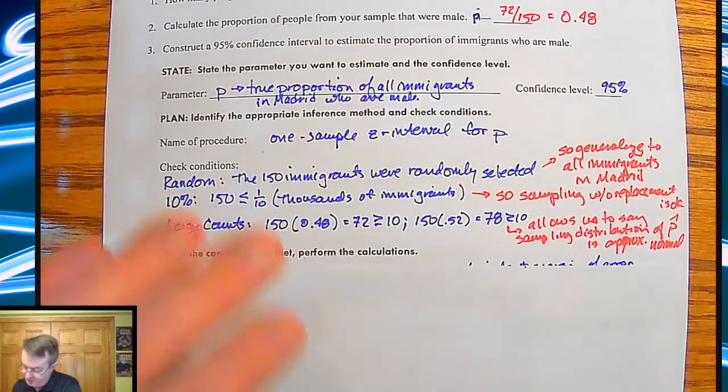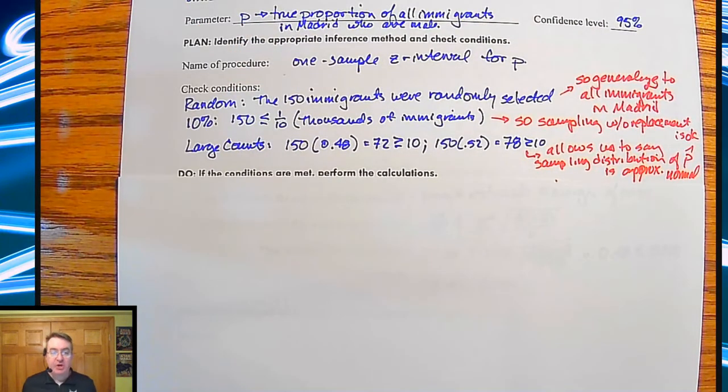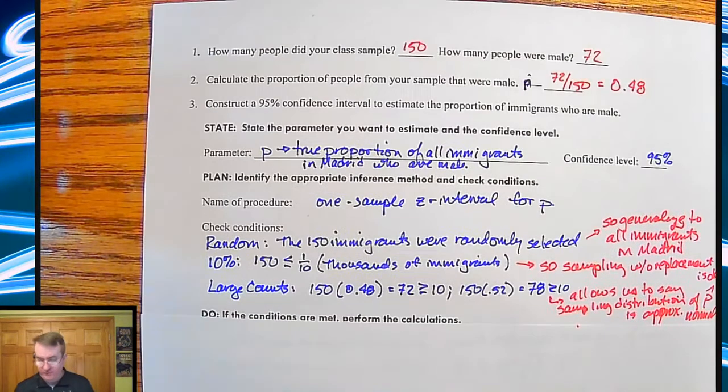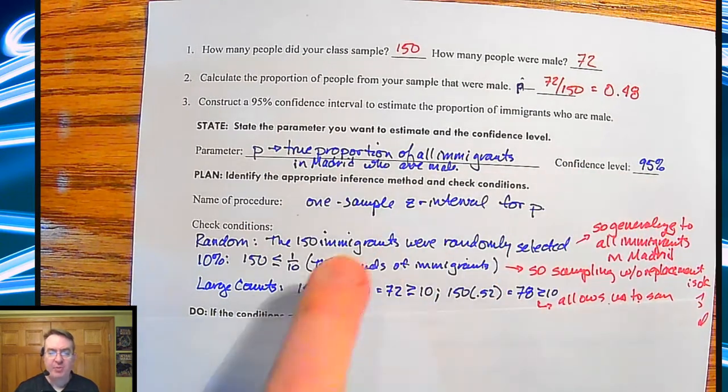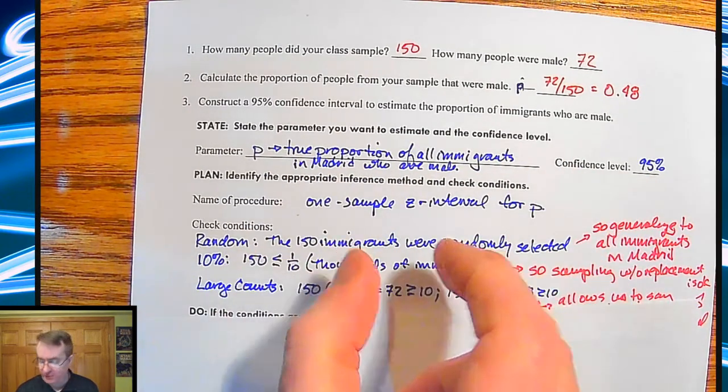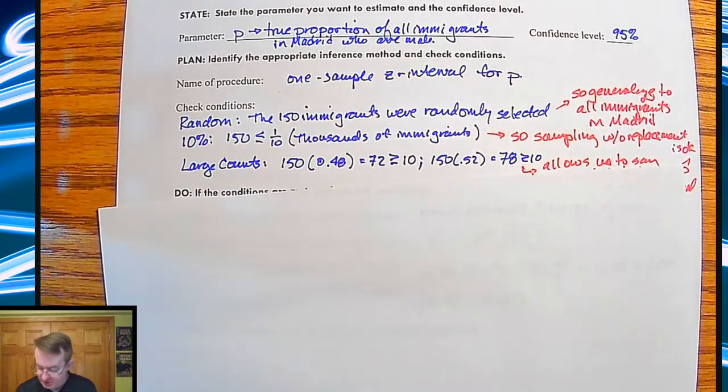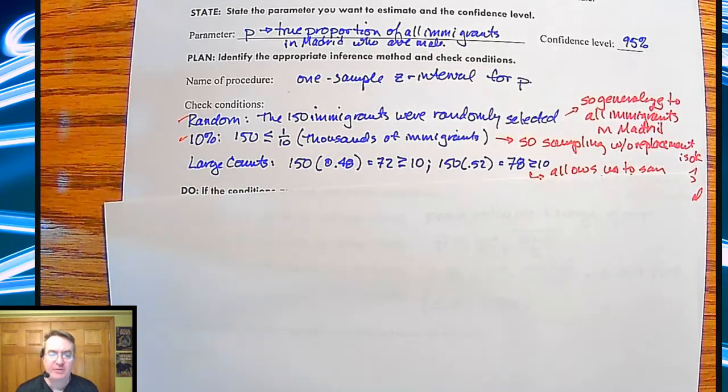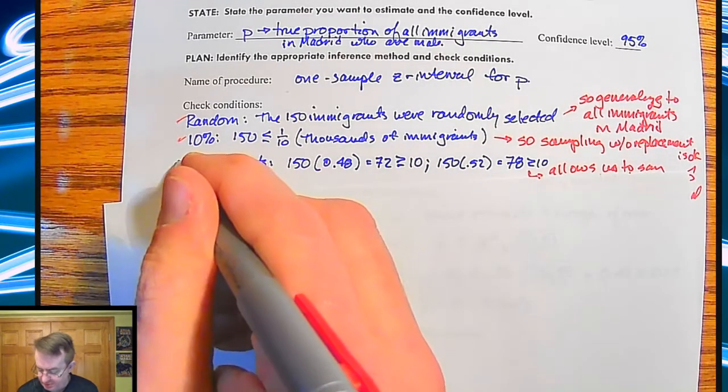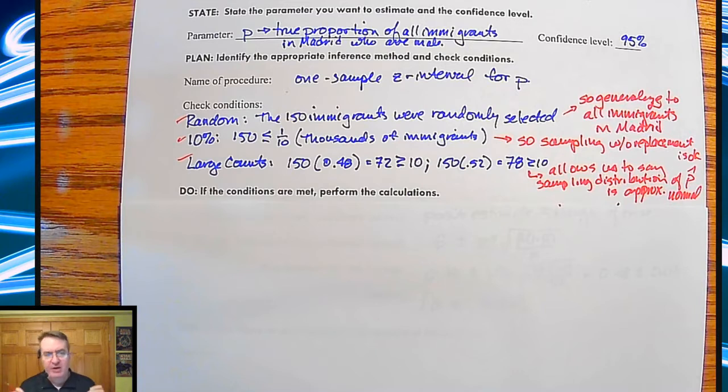All right. So we stated what we're going to do. So again, four steps. We stated what we're going to do. We want this parameter here. This is my confidence level. We planned it. We said we're going to do a confidence interval of one sample Z interval for proportions. And then we checked the three conditions. So we had it being random. We hit the 10% rule so that we can make sure we don't have to worry about replacements. We hit large counts to say that we can pretend or we can treat it as normal. Now here's the do.